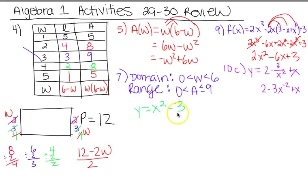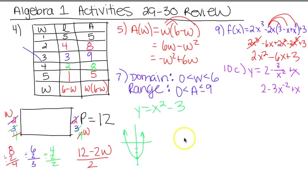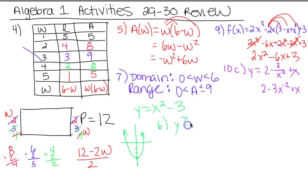By looking at the transformations, this graph has a vertical shift down 3. The range — the y-values — starts at negative 3 and goes up forever. So the range is y ≥ −3. The axis of symmetry always goes through the x-coordinate of the vertex. The vertex here is (0, −3), so the x-coordinate is 0, meaning x = 0 is the axis of symmetry.